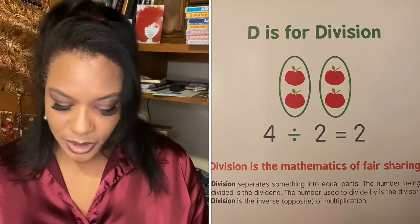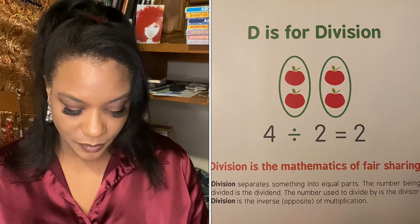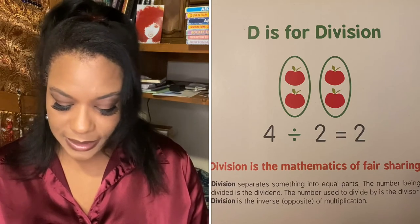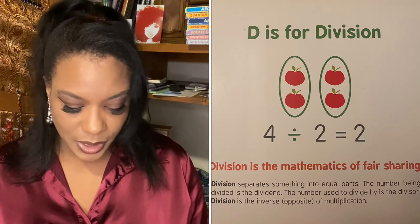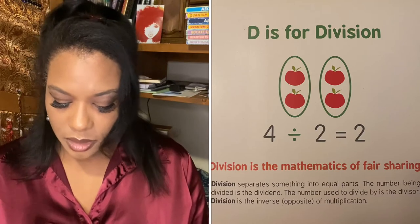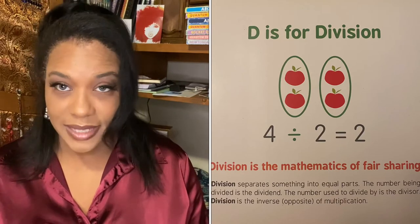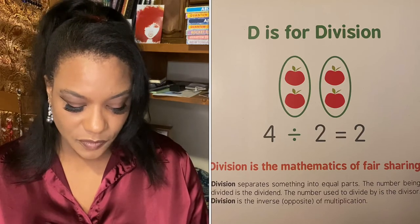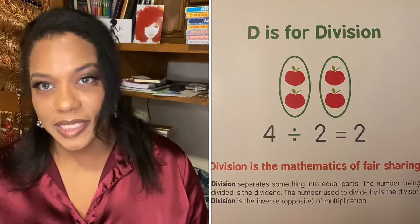D is for division. Division is the mathematics of fair sharing. Division separates something into equal parts. The number being divided is the dividend. The number used to divide by is the divisor. Division is the inverse opposite of multiplication.